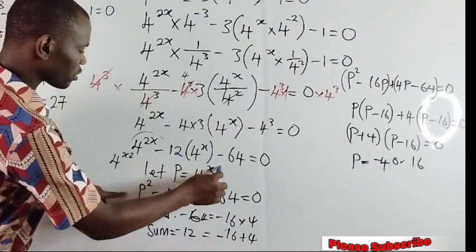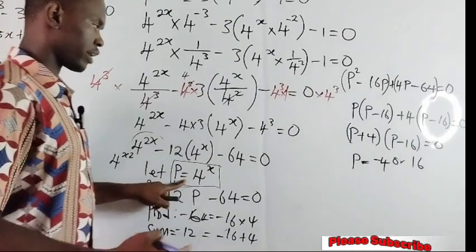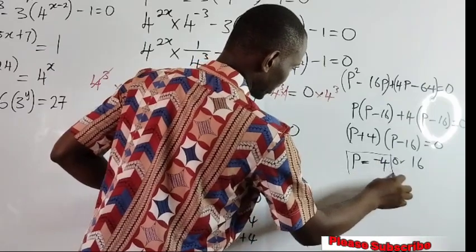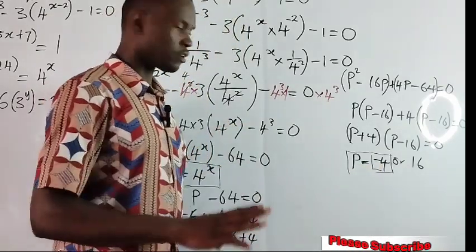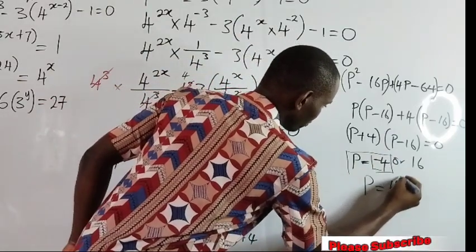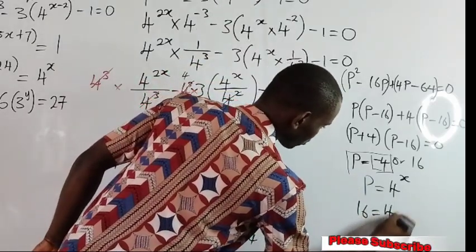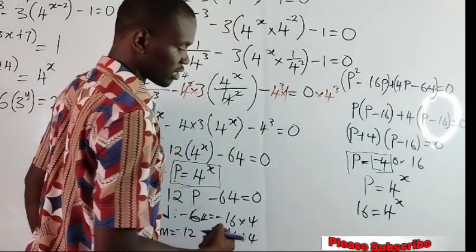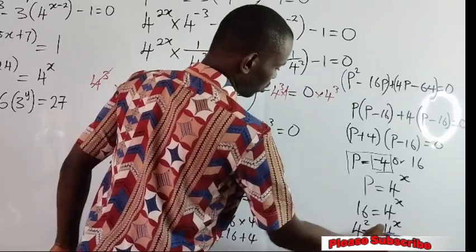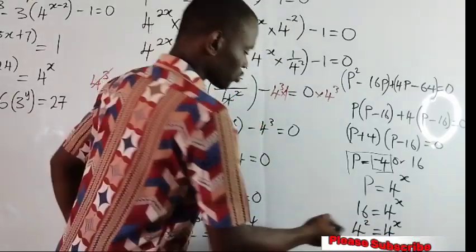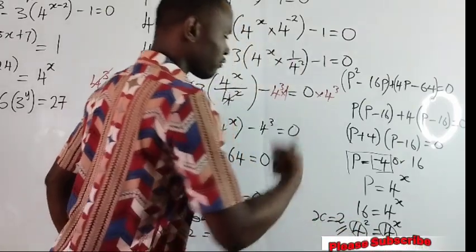We go back to where we imported the variable p, which is p equal to 4 raised to the power x. We will not use negative 4 because it is negative — our concentration is always on the positive value. So our p is 16. We say 16 equal to 4 raised to the power x. Writing 16 as its index: 4 raised to the power of 2 equals 4 raised to the power of x. The bases are equal, so we equate the powers, giving x equals 2.